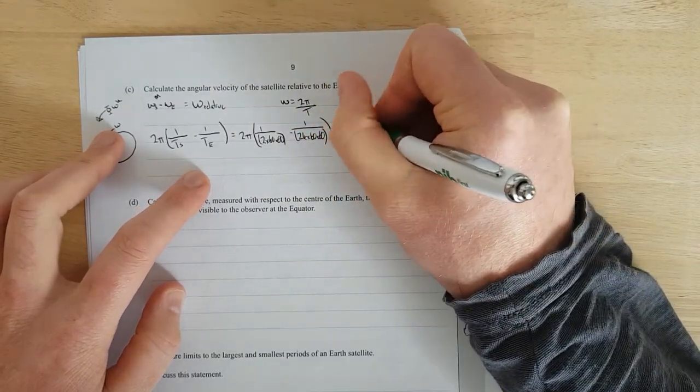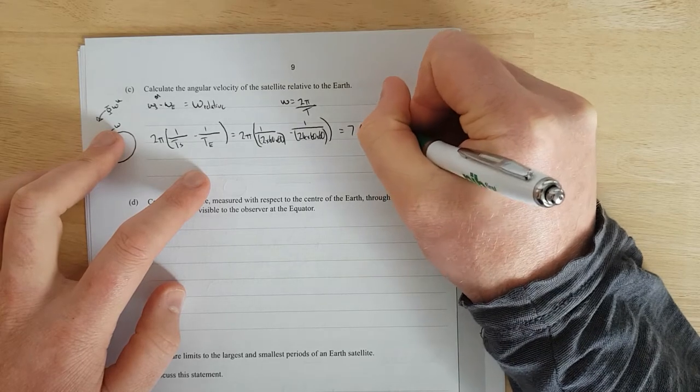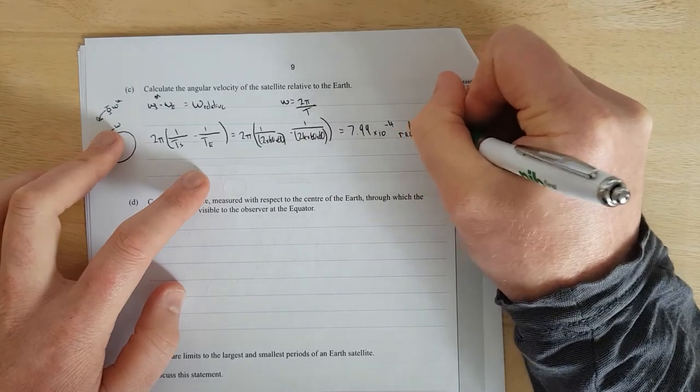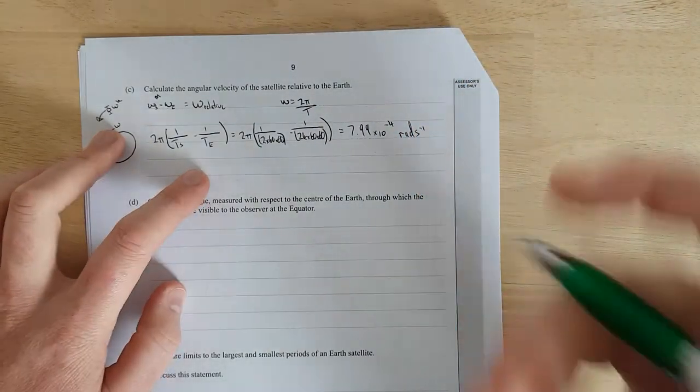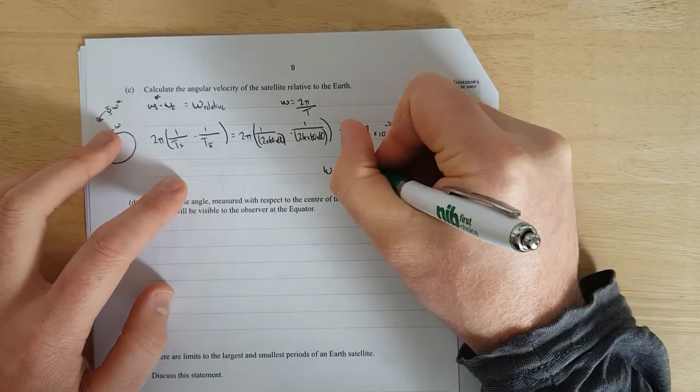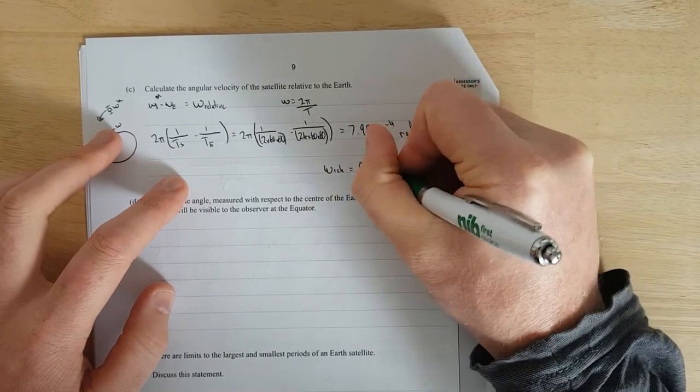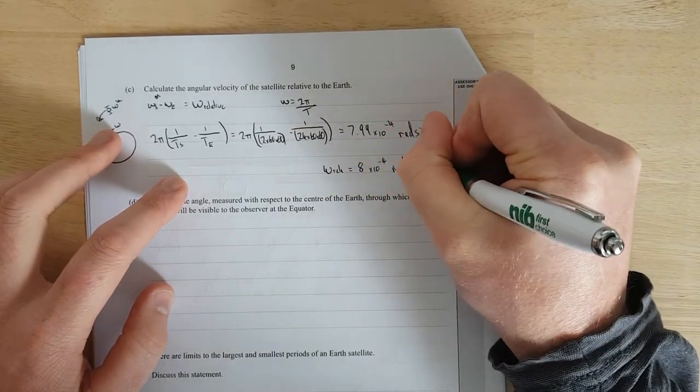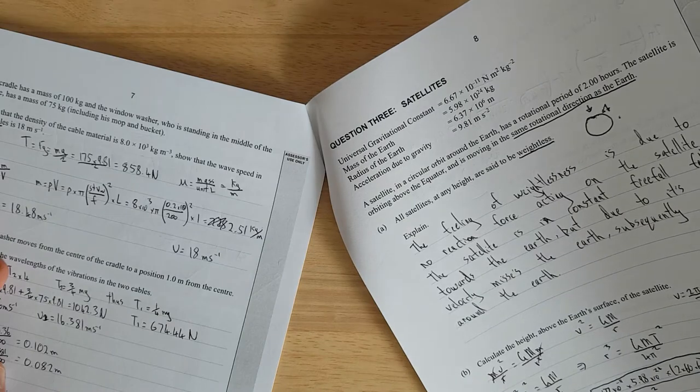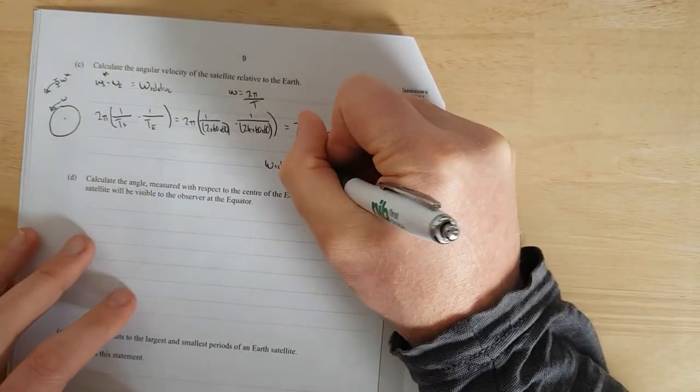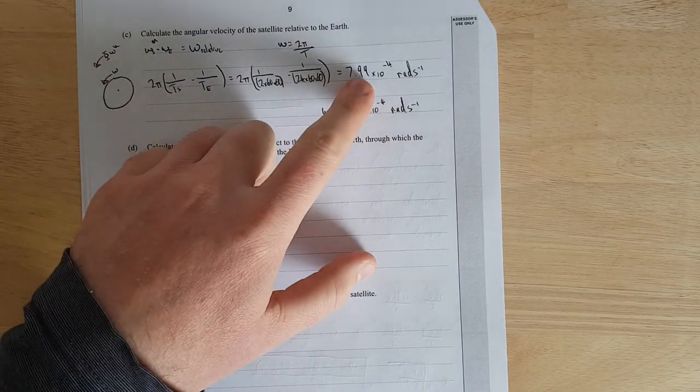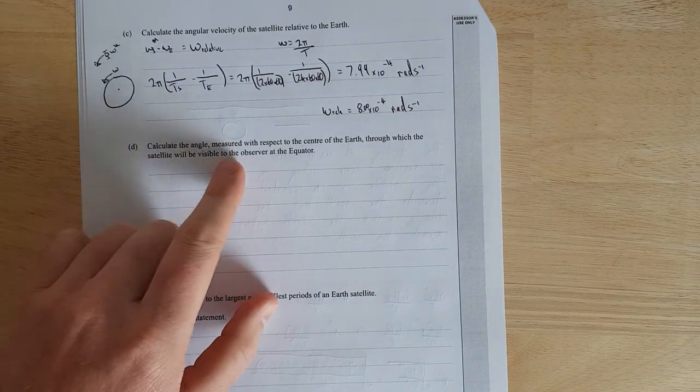And that is going to be equal to 7.99 × 10⁻⁴ radians per second. Oh, that was 3 significant figures, wasn't it? Maybe I could just do 8.00, there you go, I'll round it up. I probably could have done 6, ah, no, but it rounds all the way.